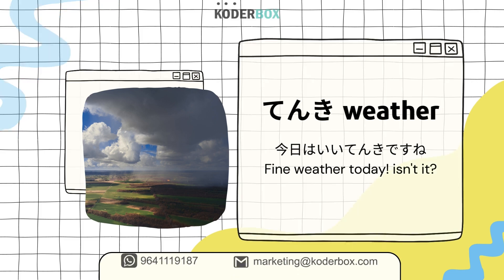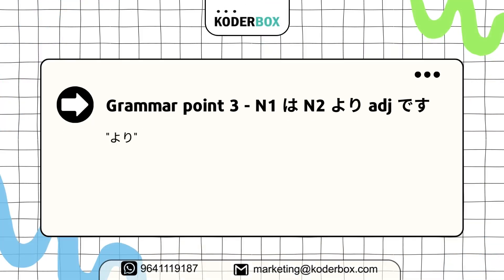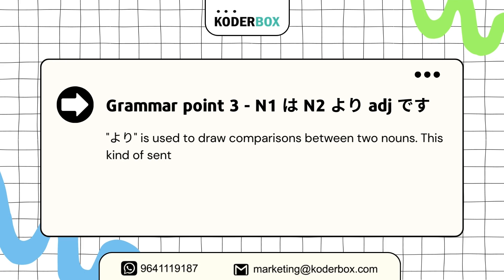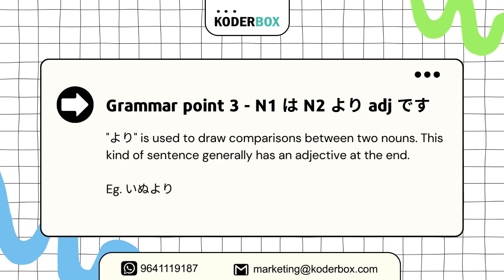Grammar point three: N1 wa N2 yori adjective desu. Yori is used to draw comparison between two nouns. This kind of sentence generally has an adjective at the end. Example: Inu yori neko ga suki desu. I like cats more than dogs.